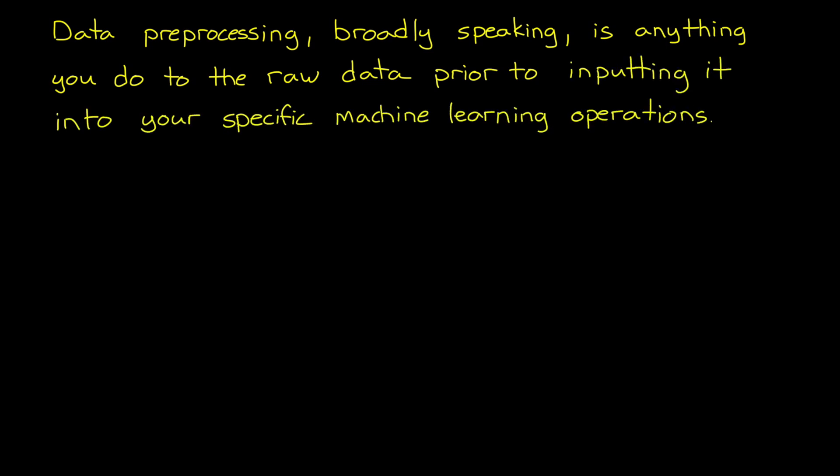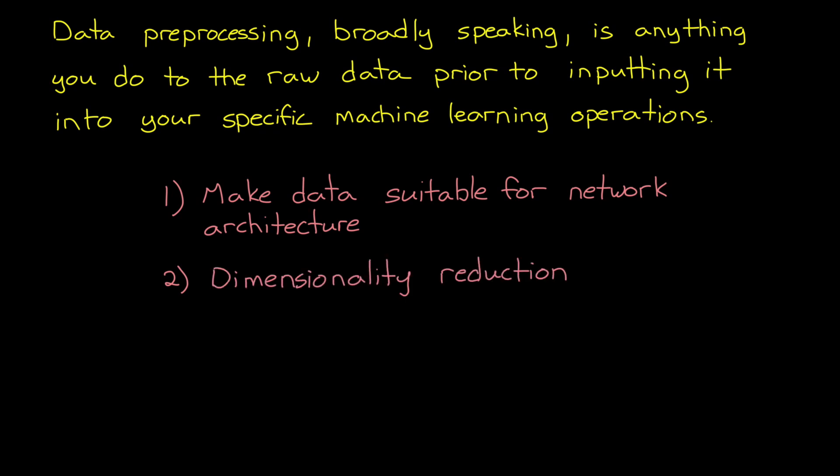Data pre-processing is a pretty broad term. It's basically anything you do to the raw data prior to inputting it into your specific machine learning operations. And it's hugely important for at least three reasons. One, pre-processing can transform the data into a form that is suitable for the network architecture. Two, it can help reduce the dimensions of your data and make patterns more obvious. And three, it can adjust the training data to ensure the entire solution space is covered. So let's walk through an example of each of these so that hopefully they make a little more sense.